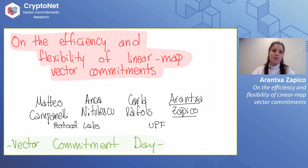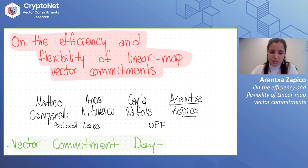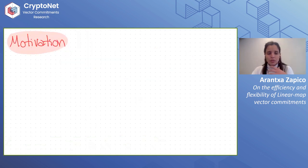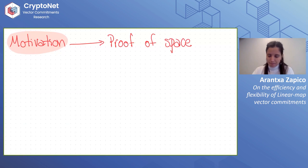As Anca mentioned before, I'm going to talk on the efficiency and flexibility of linear map vector commitments. This is joint work with Matteo Campanelli and Anca from Protego Labs and Keller Raffles from University Pompeo Fab. The motivation of our work is to develop vector commitment schemes in the setting of proof of space.